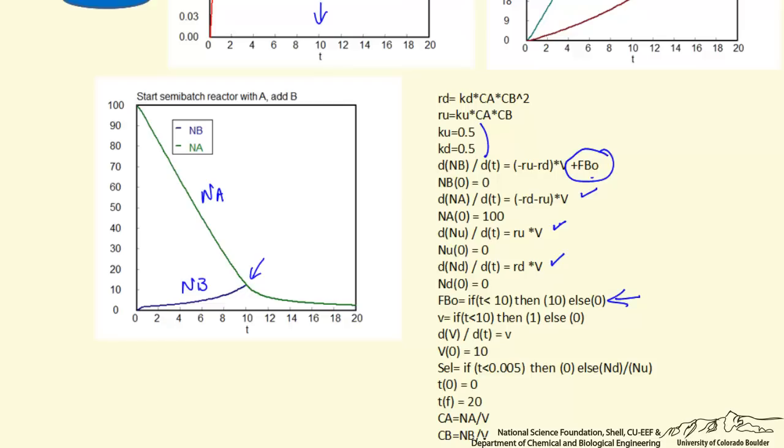Up to a time of 10, the flow rate is 10, otherwise the flow rate is 0. So we turn off the flow. We likewise have an equation for the volumetric flow rate, and we need a differential equation for how the volume is changing with time, because that certainly affects the concentrations.